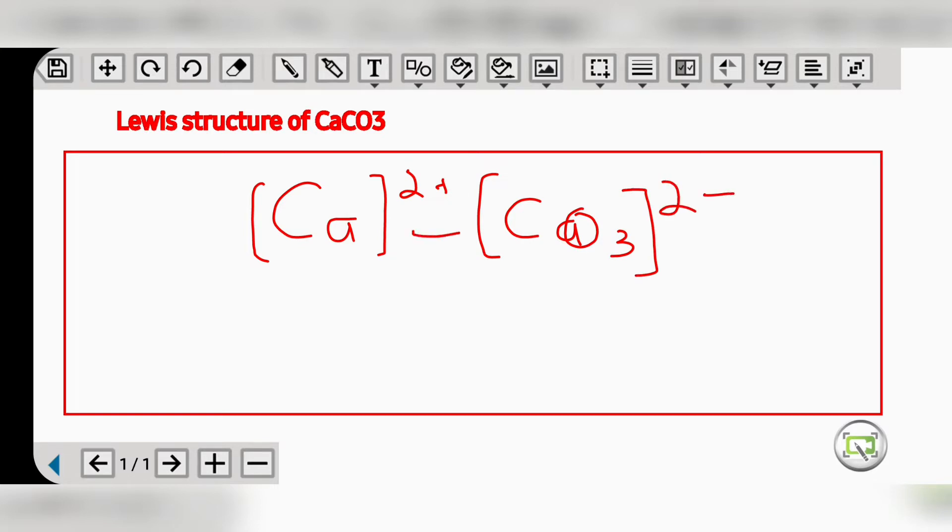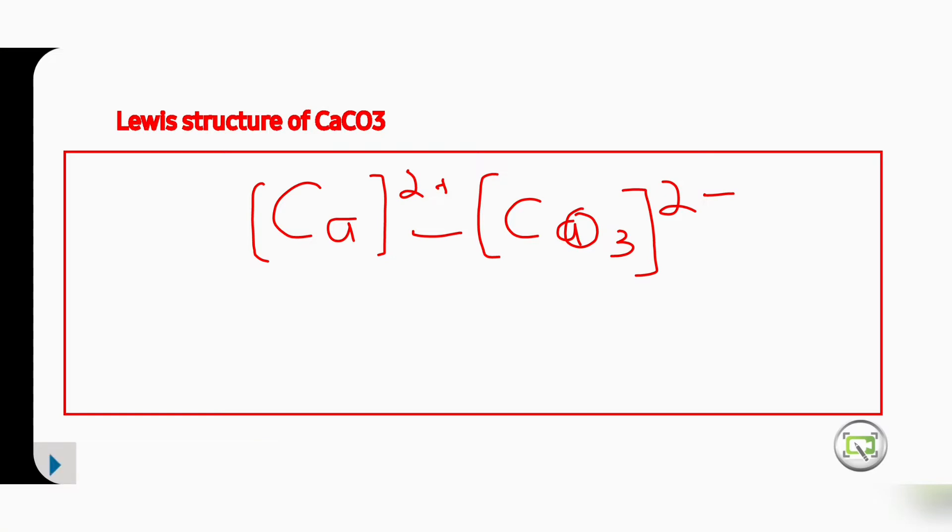These two have ionic bonding between each other - cations and anions attract each other through ionic bonding. In this video, we will draw the Lewis structure of carbonate. First of all, we have to count the valence electrons of carbonate.